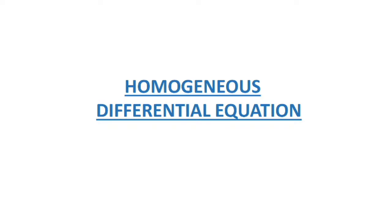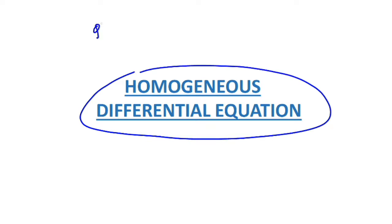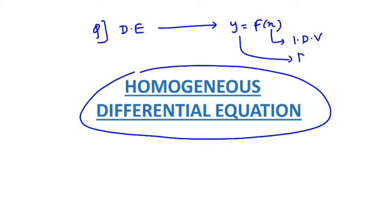Welcome to Study Simplified. Today our topic is homogeneous differential equations. We have one differential equation and we have to find the solution, represented as y = f(x). We have two variables, x and y. x is the independent variable and y is the dependent variable, because whenever you change x, y is affected, but x does not depend on anything.